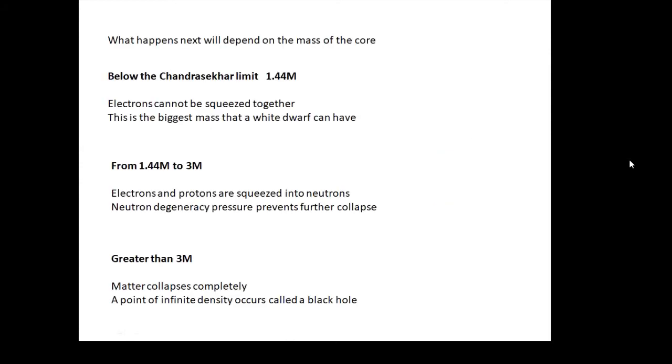So what happens next will depend on the mass of the core. Below the Chandrasekhar limit, which is 1.44M, electrons can't be squeezed together. There's not enough gravity to squeeze them together and we just get a white dwarf. From 1.44M to 3M, you can squeeze the electrons together. Electrons and protons are squeezed into neutrons, but then you can't squeeze the neutrons together. This is called neutron degeneracy pressure. Basically you can't squish neutrons together and it can't collapse any more than that.